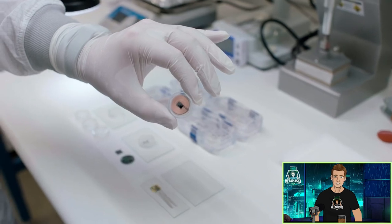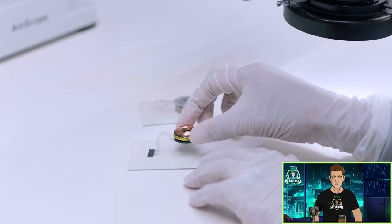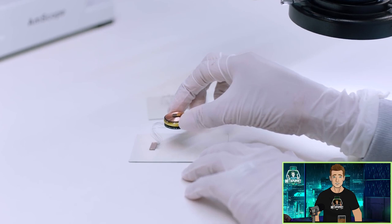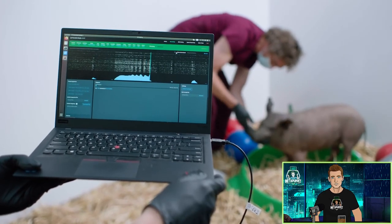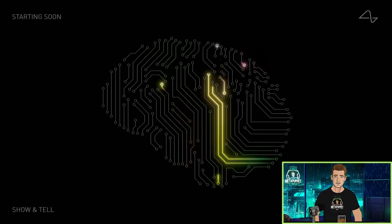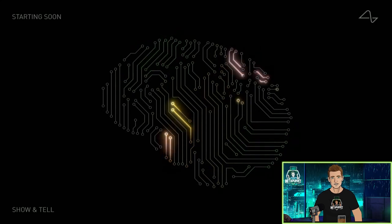The implant is called the N1. And what does it do? According to Elon Musk, it's a generalized input-output device that can, in the long term, interface with every aspect of the brain, and in the short term, interface with any given section of the brain.